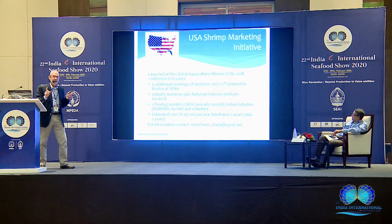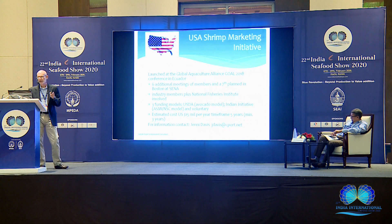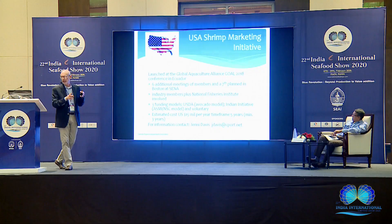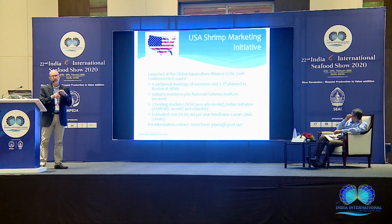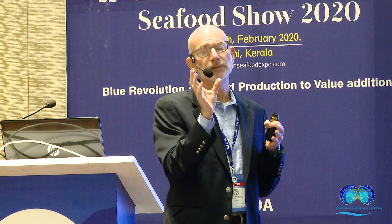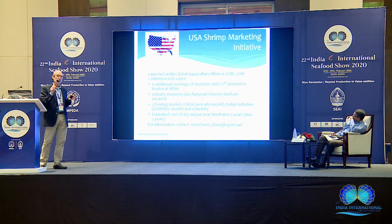I was asked to talk about the U.S. marketing initiative that the Global Aquaculture Alliance is involved in, launched in Ecuador in 2018. They've had six meetings since then, with industry members from the United States, India, and around the world working to establish a shrimp marketing program. There are three basic funding models: a U.S. government importer tax, a country-level program like ASMI or the Norwegian Seafood Council, or a voluntary contribution model. It's estimated this program would cost $15 million a year minimum, and they need three to five years to get it up and running.